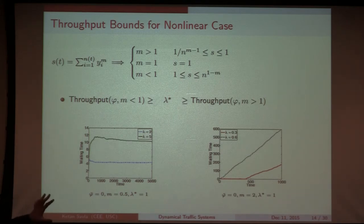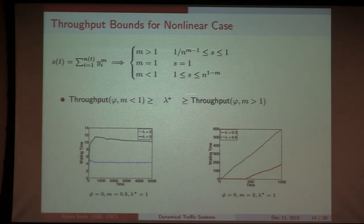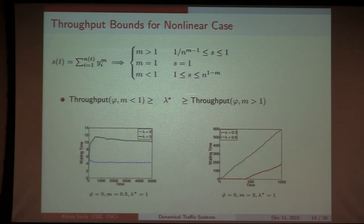The key takeaway from simulations and analysis is that there appears to be a phase transition as you go from a sublinear car-following model to linear or superlinear. In the sublinear regime, no matter what lambda you choose, the system remains stable — the queue length value may increase with lambda but it stabilizes. In the superlinear regime, the throughput becomes finite and decreases as drivers become more cautious.